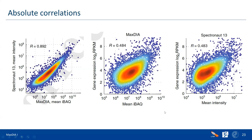Comparing iBAQ and Spectronaut intensities against RPKM values from a matching transcriptomic dataset yields Pearson correlations around 0.5, which is typical for transcript-protein correlations due to biological reasons. The biological variation dominates over software differences. MaxDIA's distribution appears more regularly shaped, while Spectronaut shows some irregular structure — whether this has a biological interpretation is uncertain.